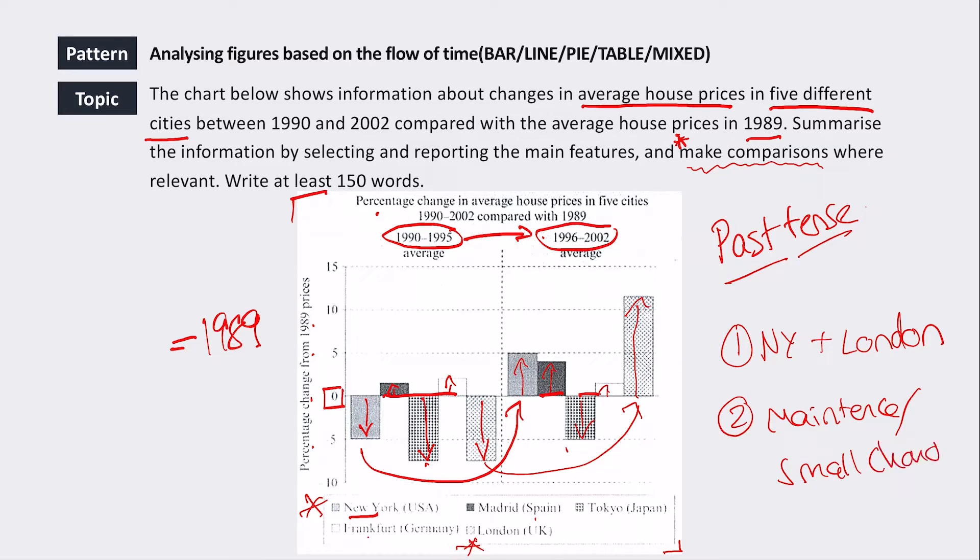So if I was structuring this, I would do my first section would be my introduction, paraphrase the question, and then give my overview of the main changes and trends. And then I would in detail talk about New York and London. And then in the next detail, talk about the other three countries. So now we've taken a quick look at what we're going to do. Let's see what this candidate has done.